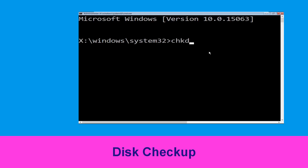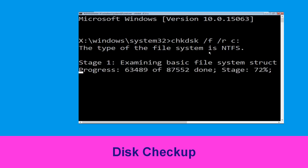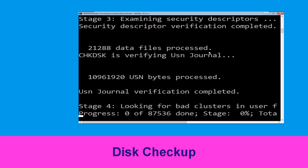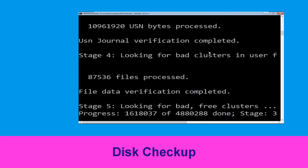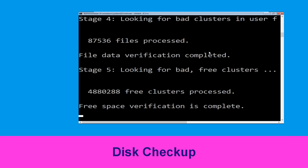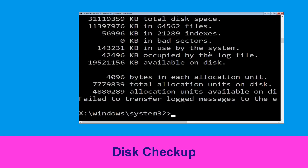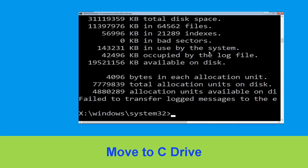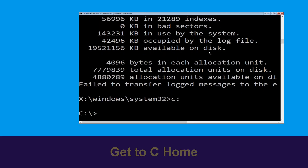Now type: chkdsk /f /r C: and hit Enter. Then we need to wait for some time to complete the process. Once done, move to the next step. Now type C: and hit Enter.